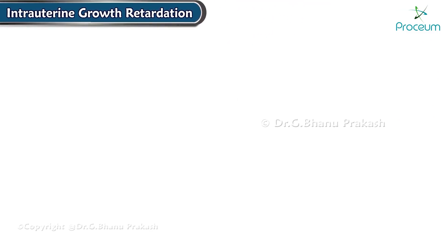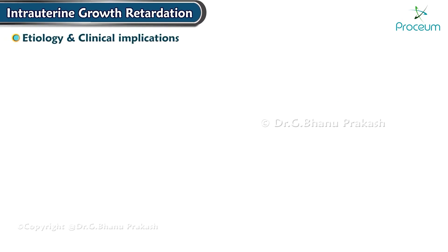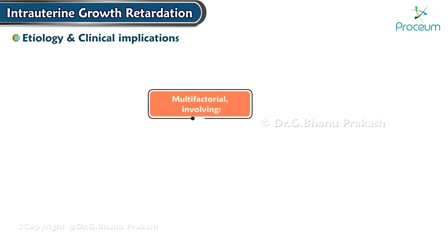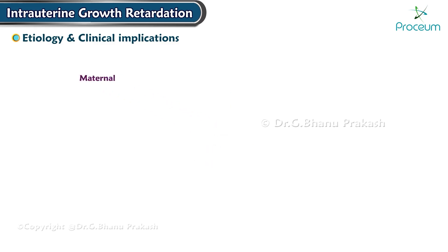Intrauterine growth restriction, also known as fetal growth restriction, is a condition where a fetus is unable to achieve its genetically determined potential size. The etiology of intrauterine growth restriction is multifactorial, involving maternal, uterine, placental, and fetal factors.